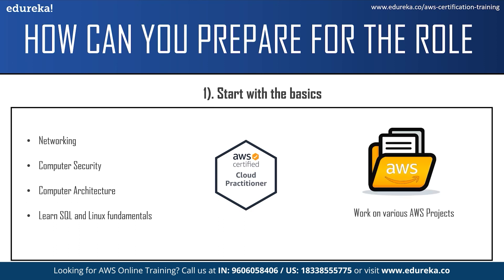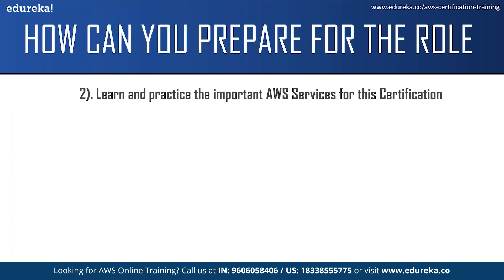The next step would be working on AWS projects. You can work on projects using different services. Start with easier projects initially and then move on to more difficult ones. You can find some good projects on the Amazon Web Services official website. The next step is learning and practicing the important AWS services for the certification.